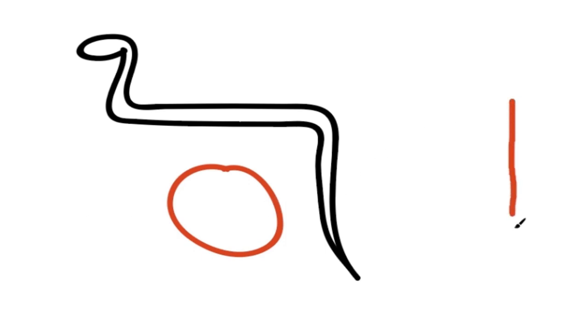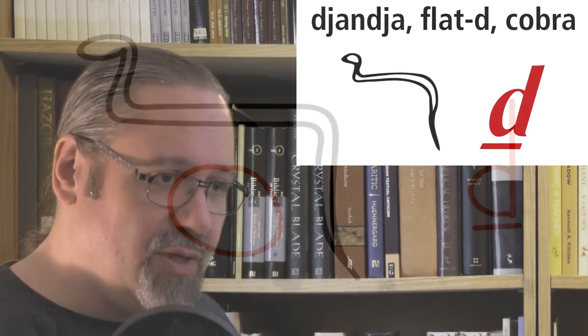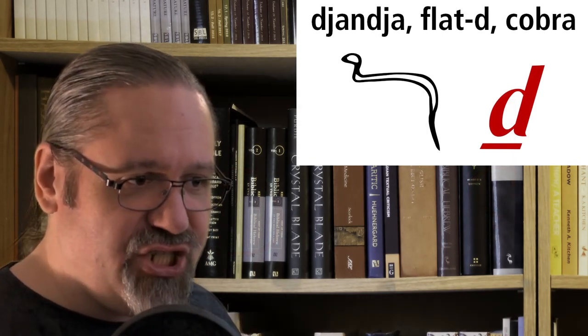Now, the transliteration for this is the letter D with a straight line underneath it. The janja is pronounced with a jh sound, as in edge or wedge. It's that jh sound.